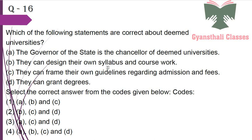Which of the following statements are correct about deemed universities? The Governor of the state is the chancellor of deemed university — no; they can design their own syllabi and coursework — yes; they can frame their own guidelines regarding admission and fees — yes; they can grant degrees — yes. So the answer is B, C and D.